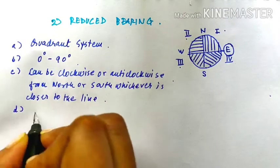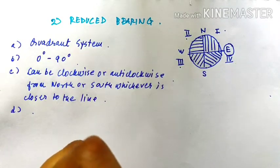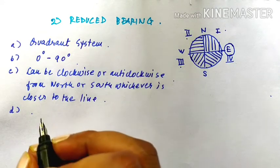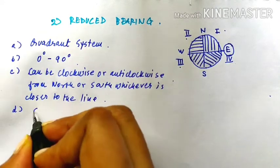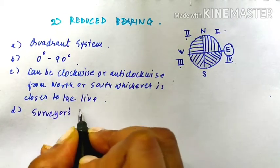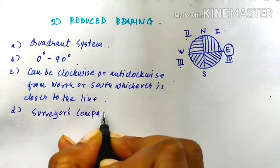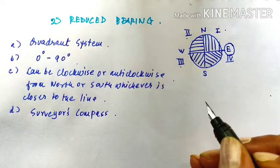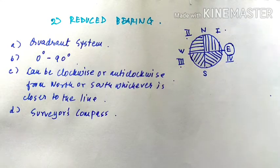Now, the fourth characteristic or say the fourth use of this kind of reduced bearing is found in Surveyor's Compass. So, to be clear, again, let me further divide the quadrant into directions.